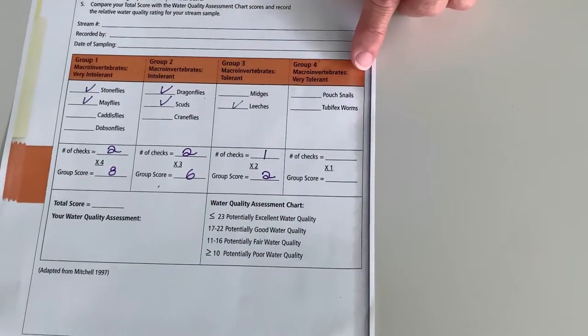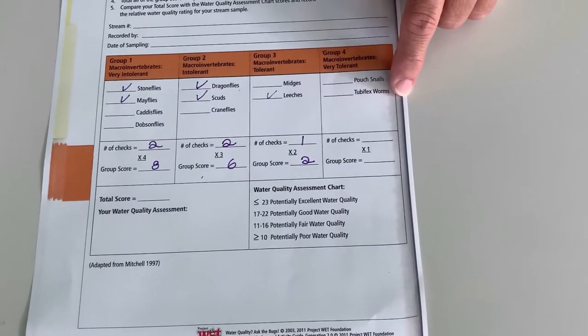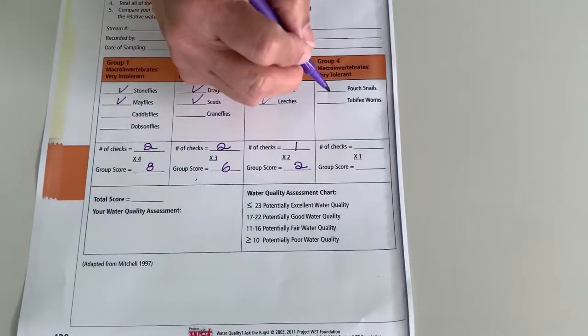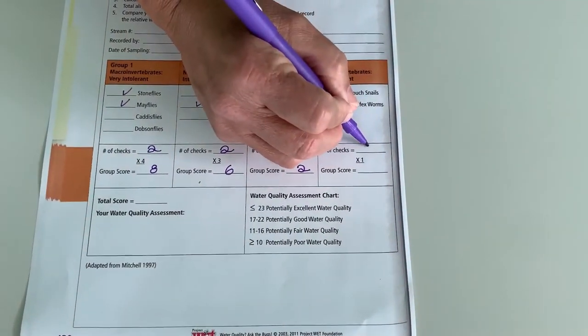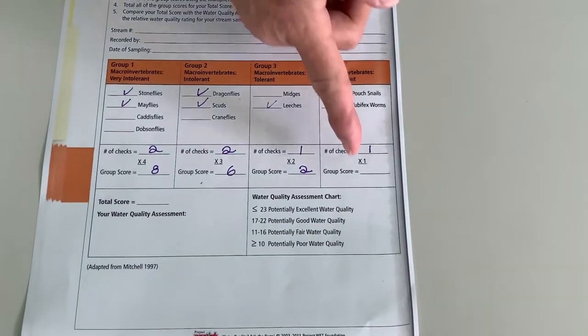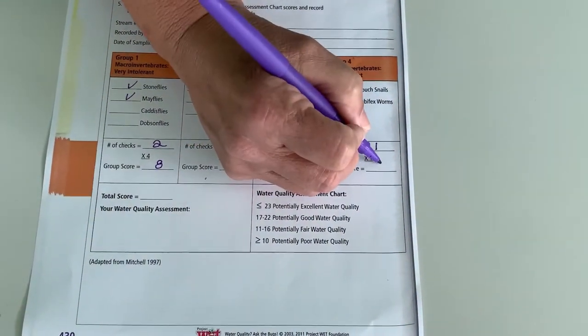Then we come to group 4. Pouch snails or the worms. Let's say we found worms today. Again, only 1. One check. The weighting factor is 1. So that math is easy. 1 times 1 is 1.